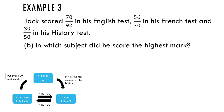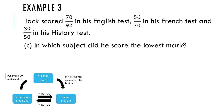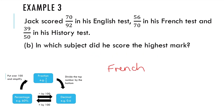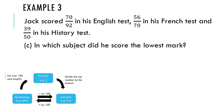The answer to the highest mark is French. And in part C, in which subject did he score the lowest mark? If we look at our marks again, we can see that in his English test he did. So we can answer this one and say English.